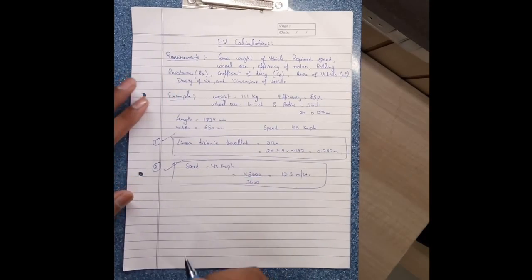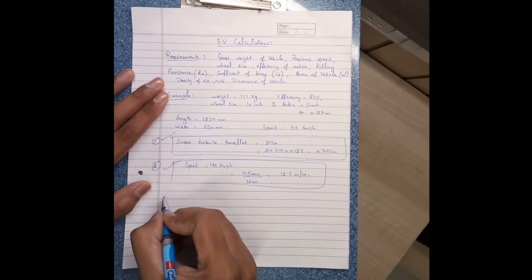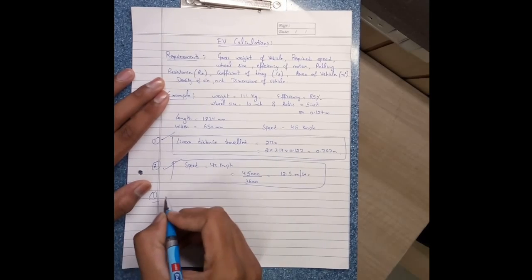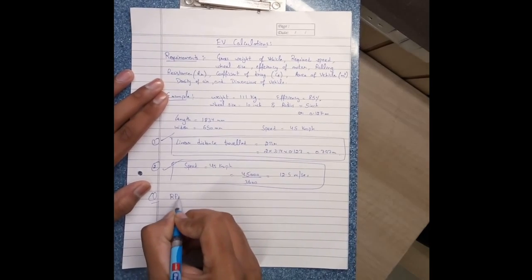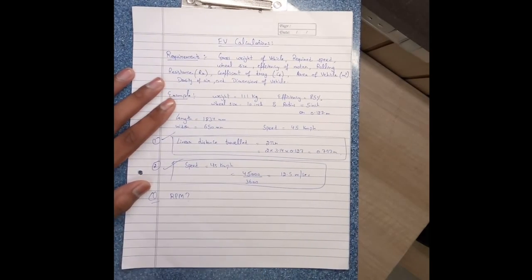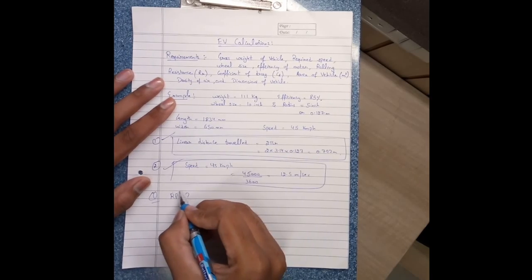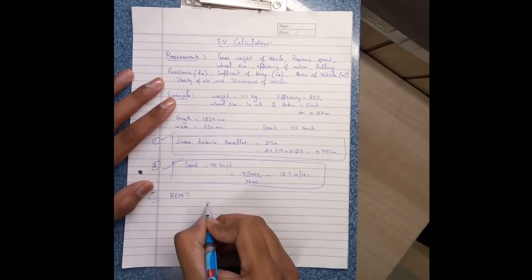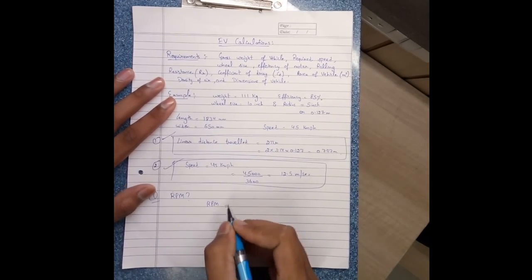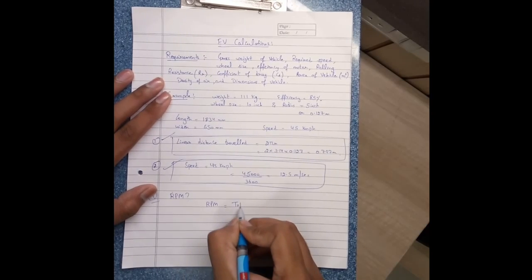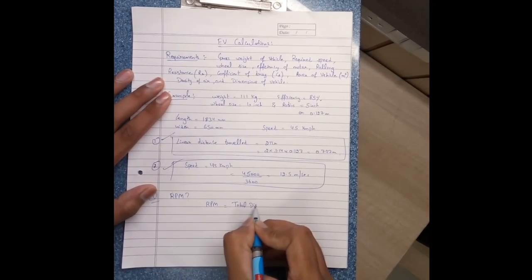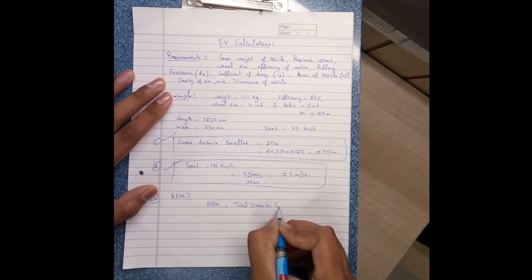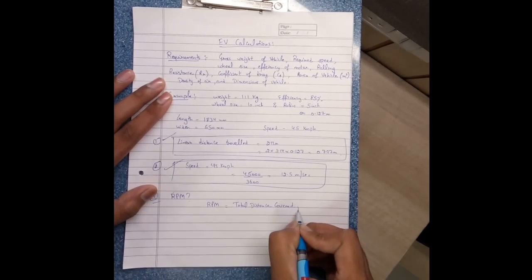These two values are used in further calculations. Now first question is what is RPM? RPM is revolution per minute. And how to calculate RPM? RPM equals to total distance covered per hour...